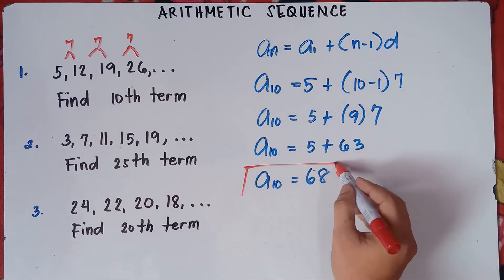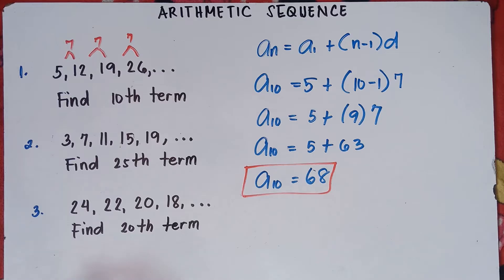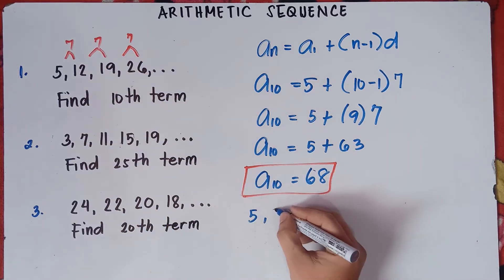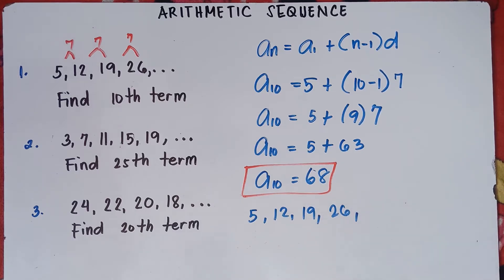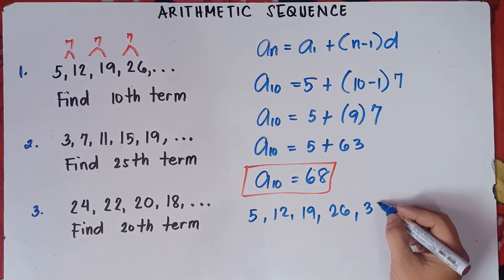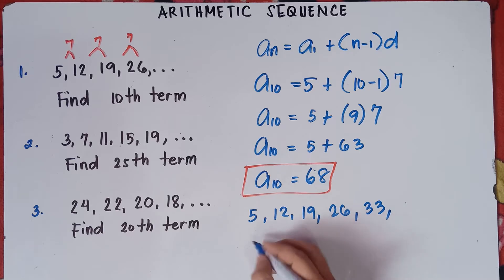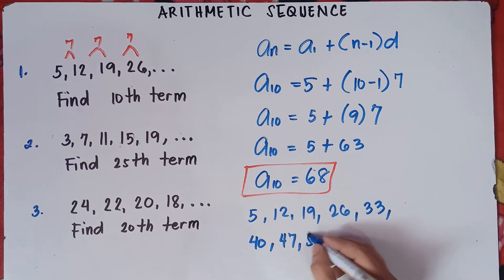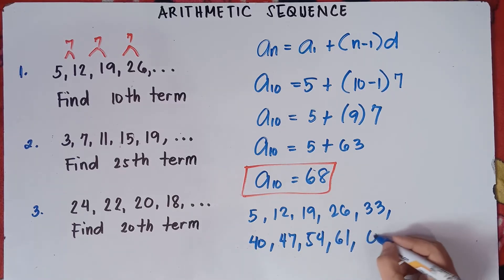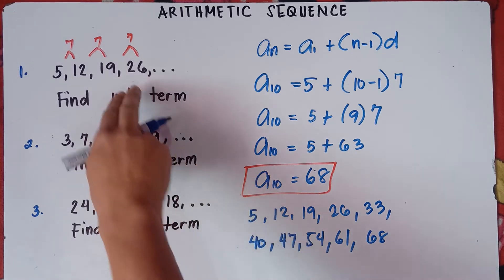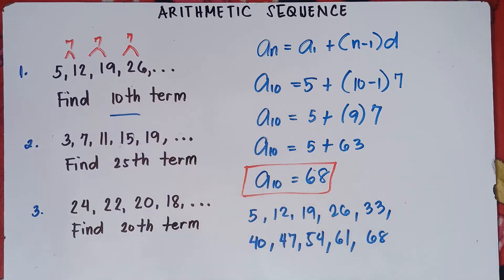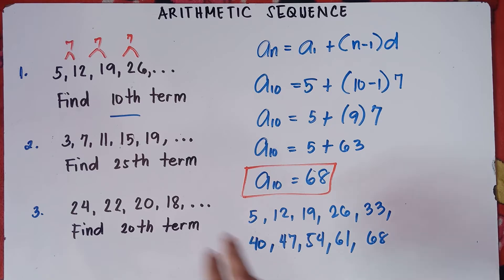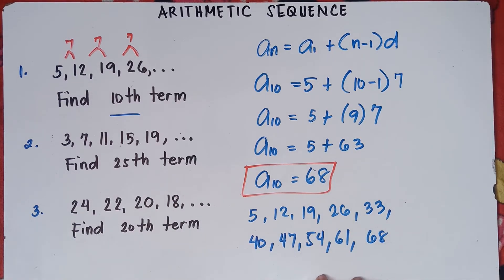That's how you find the 10th term of this given sequence. If we verify manually: starting at 5 with common difference 7, the terms are 5, 12, 19, 26, 33, 40, 47, 54, 61, 68 — so the 10th term is 68. You can do it manually for the 10th term, but for the 100th or 50th term, the formula is much faster. Pause the video and check the solution.